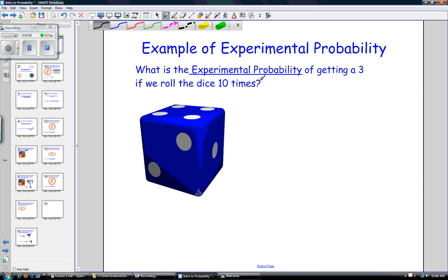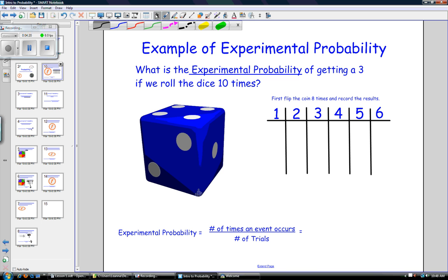Final example of experimental probability. What is the experimental probability of getting a three if we rolled the dice ten times? So again, we have to roll the dice.